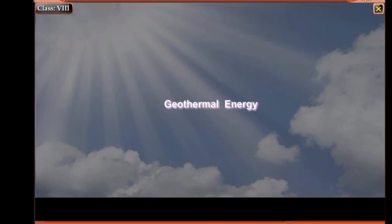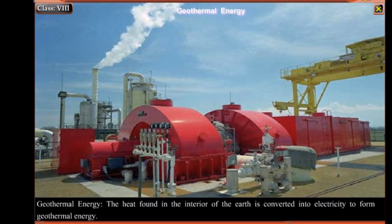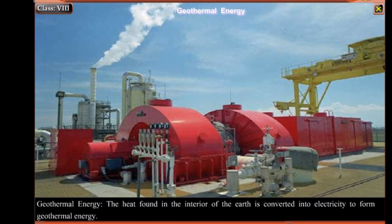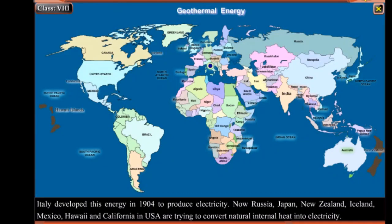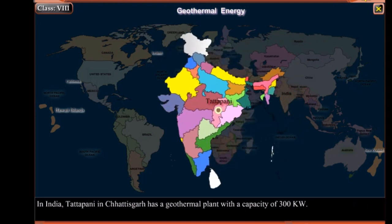Geothermal Energy: The heat found in the interior of the earth is converted into electricity to form geothermal energy. Italy developed this energy in 1904 to produce electricity. Now, Russia, Japan, New Zealand, Iceland, Mexico, Hawaii and California in USA are trying to convert natural internal heat into electricity. In India, Tattapani in Chhattisgarh has a geothermal plant with a capacity of 300 kilowatts.